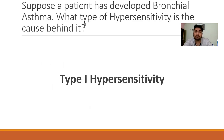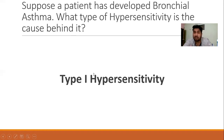Suppose a patient has developed bronchial asthma. What type of hypersensitivity is the cause behind it? The answer is that type 1 hypersensitivity is the cause behind bronchial asthma.